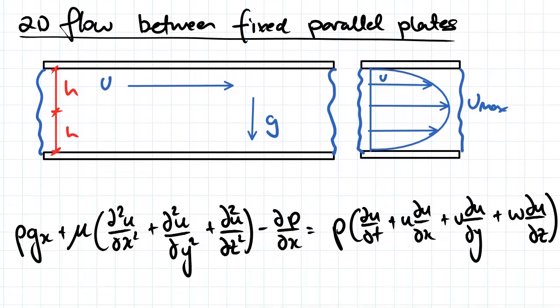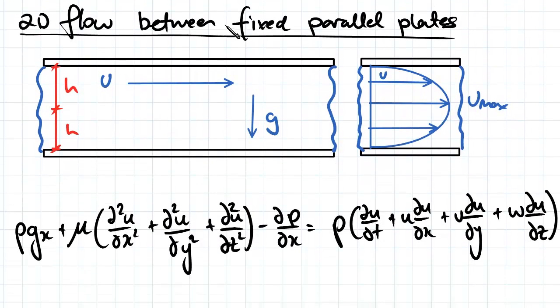The next thing we want to look at is 2D flow between fixed parallel plates. So here these are fixed, so we're going to expect to have a velocity equal to zero at each of these plates.